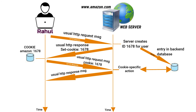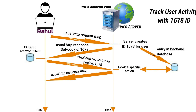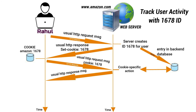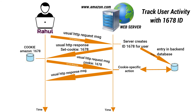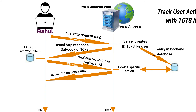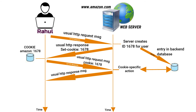In this manner, the Amazon server is able to track Rahul's activity at the Amazon website. Although Amazon does not necessarily know Rahul's name, it knows exactly which pages user 1678 visited, in which order, and at what time.